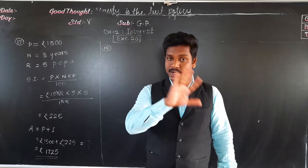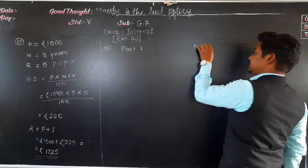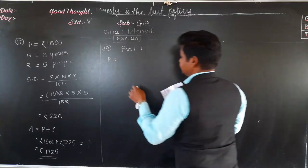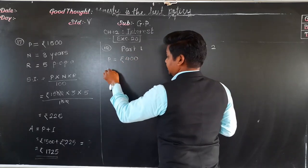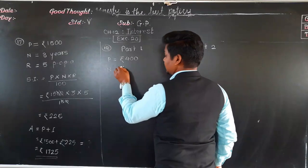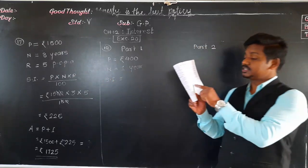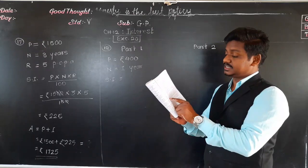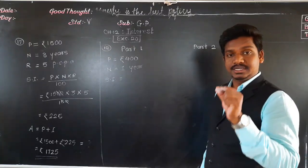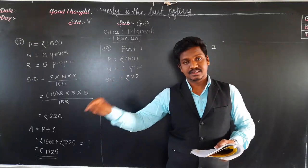There are two parts to this example. In Part 1, principal is rupees 400, number of years is 1, and simple interest is rupees 22 — because 'the simple interest for one year on rupees 400 is rupees 22.' What is not given is the rate of interest — 'certain rate' means unknown, so we have to find it.